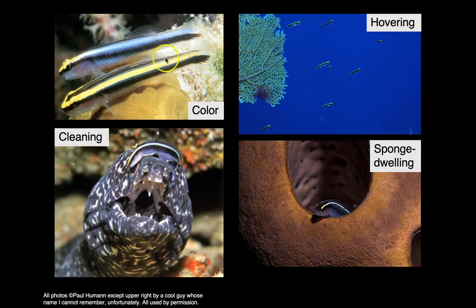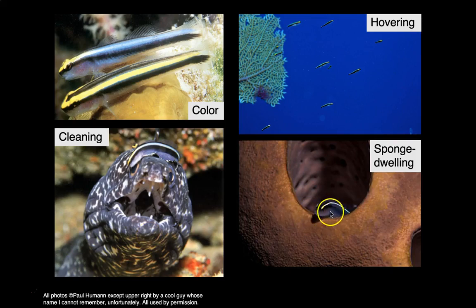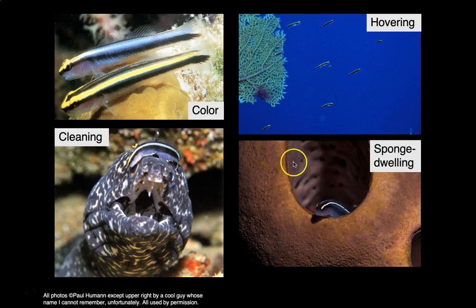There are three behaviors. First, hovering behavior: species stay up in the water column, hovering and feeding on plankton that drifts by on ocean currents. Second, cleaning behavior: some species remove parasites from other fishes on the coral reef — for example, this goby is removing parasites from an eel. Third, sponge dwelling: these species live inside large tube sponges on coral reefs and feed on parasites of the sponges, such as tiny parasitic worms.